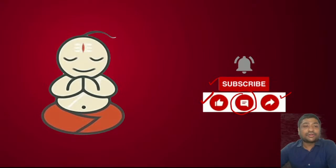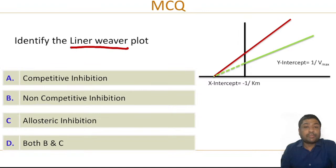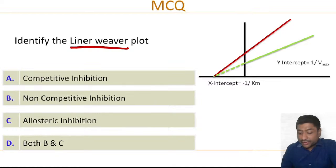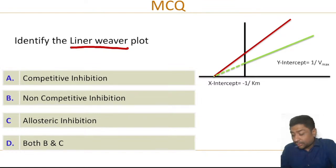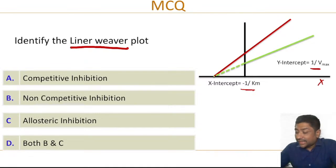Let's start with the first question for today. This is a biochemistry question on a Lineweaver-Burk plot — basically on enzyme-substrate interaction. The plot shown: is it for competitive inhibition, non-competitive inhibition, allosteric inhibition, or both? On the x-axis you have 1/[S] plotted and on the y-axis you have 1/Vmax plotted. This is the Lineweaver-Burk plot. Before I answer it, let me give you some theory about this question.